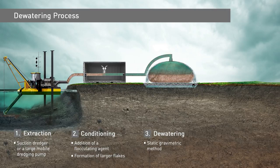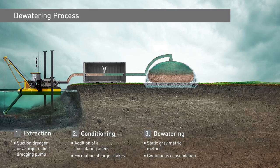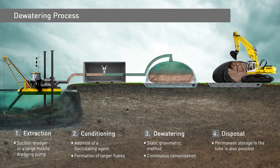This is where the third step, the core process of dewatering, takes place. Here, static gravity drainage ensures the steady removal of water from the sludge. Through the continuous process of sludge consolidation, the water content in the dewatering tubes gradually decreases until it is ready for disposal in the fourth and final step. Permanent storage in the tube is an alternative option. The encapsulation of the sludge prevents it from being re-wetted, for example by rain, during the consolidation or permanent storage phase. This allows a higher dry residue quantity to be achieved than with spoil area dewatering.